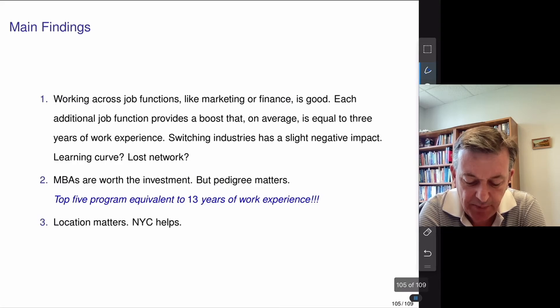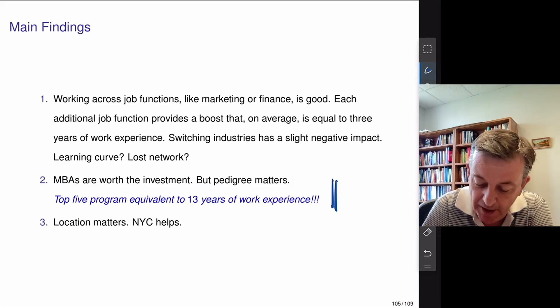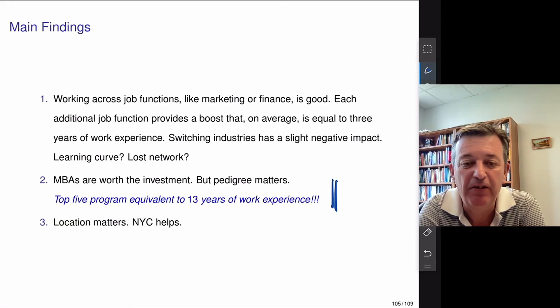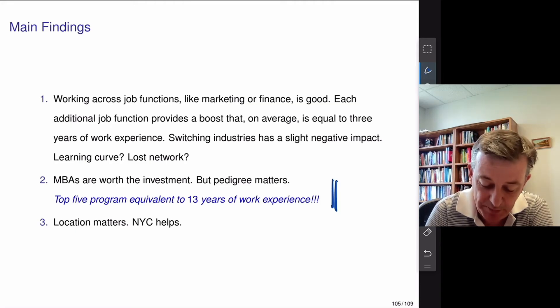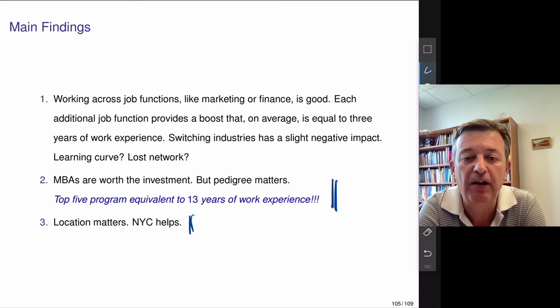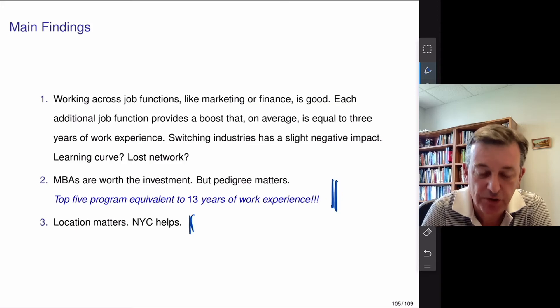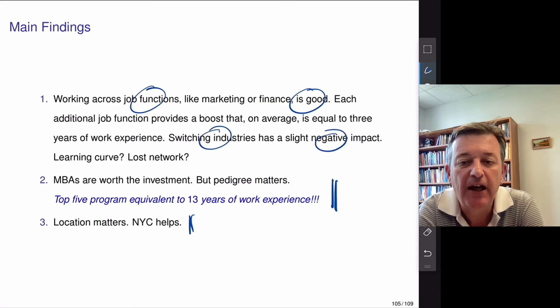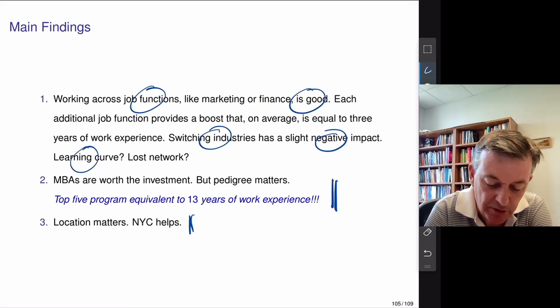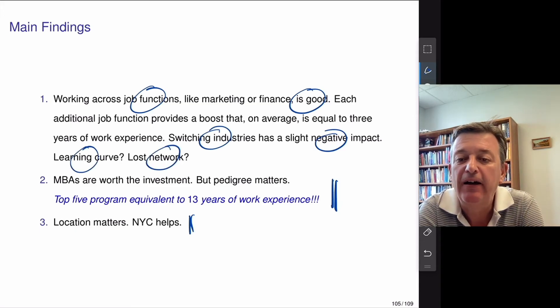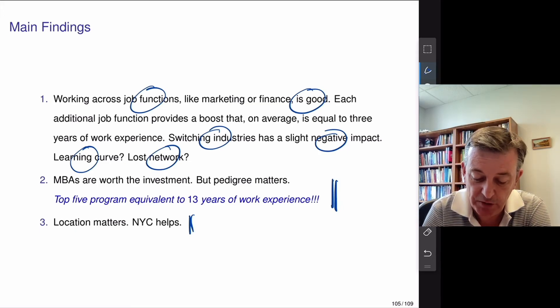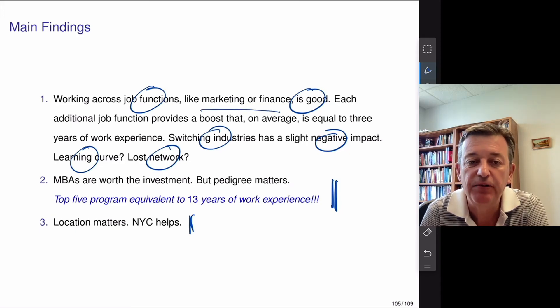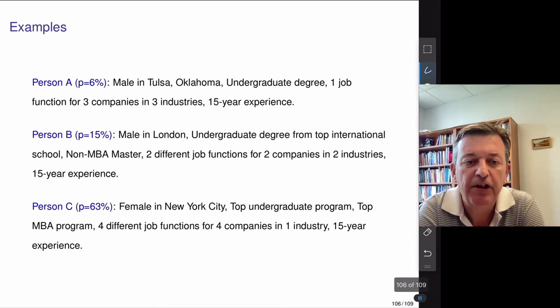So, here's a bunch of findings. As I said before, you know, until you run the data, you don't see what happens. A top five MBA program is equivalent to about 13 years of work experience. Willingness to work in New York City over that period made a big difference. And then working across different job functions, like marketing and finance is good. But switching industries is actually a negative. Why is that? Well, do you have to relearn a bunch of things? Or have you lost your network? I'm not sure what the causal reason is, but not good to switch industries. But good to work in different parts of the same industry.